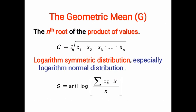The third measure of central tendency is the geometric mean. The geometric mean is the nth root of the product of values. The geometric mean is suitable for data distributed in a logarithm symmetrical distribution, especially the logarithm normal distribution. If the original values form a skewed distribution, after transforming the values to logarithmic scale they become a symmetrical distribution — this is called the logarithm symmetrical distribution. The geometric mean is the preferred measure for logarithm symmetrical distribution.